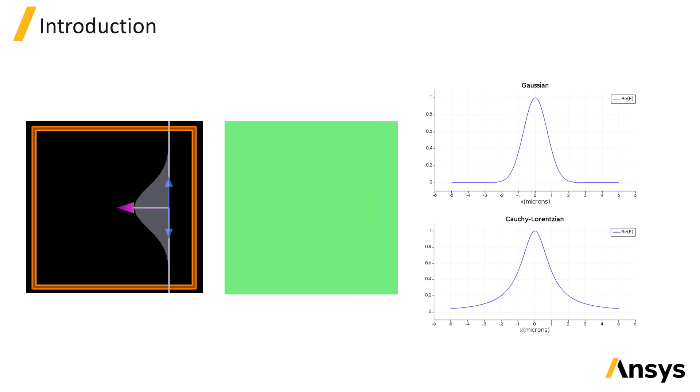The Gaussian source type injects a beam with either Gaussian field profile or Cauchy-Lorentz beam profile. This type of beam is typically used to represent an incident beam where you want to include the full profile of the beam in the simulation region.